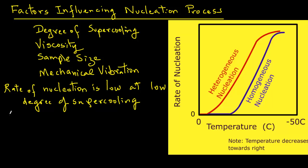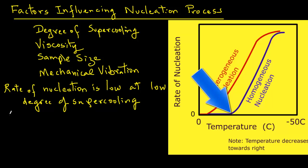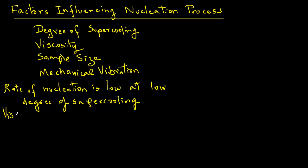If you look at these plots, the red plot is for heterogeneous nucleation and the blue plot is for homogeneous nucleation. Note that heterogeneous nucleation occurs more readily at low levels of supercooling — in other words, at higher temperatures than that required for homogeneous nucleation. You can see from the curve for heterogeneous nucleation that the rate of nucleation begins to increase at a much higher temperature than for homogeneous nucleation, for which you have to supercool your sample to much lower temperatures.